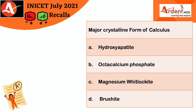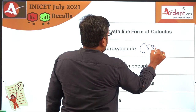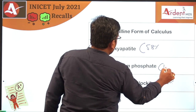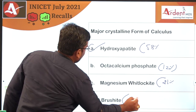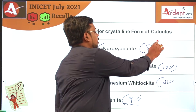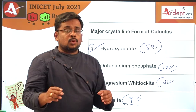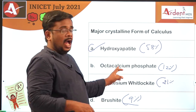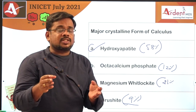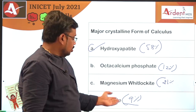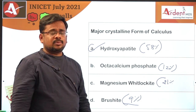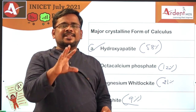One more question from perio — a direct pick question: which is the major crystalline form of calculus? Everybody knows this — hydroxyapatite is the answer. The percentage breakdown is: 58% hydroxyapatite, 21% magnesium whitlockite, 12% octocalcium phosphate, and 9% brushite. You must know these numerical values. Hydroxyapatite and octocalcium phosphate are more in supragingival calculus. Brushite is more common in the mandibular anterior region.